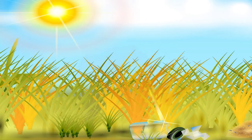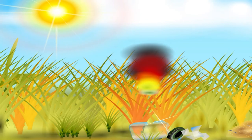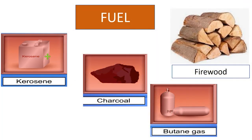Combustion can only take place when certain conditions are present. What are these conditions? One of the conditions needed for combustion is fuel. Examples of fuel are kerosene, charcoal, built-in gas, and firewood. We cannot start a fire without fuel.